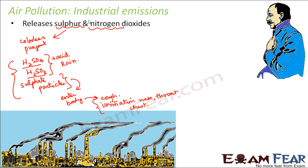Coal, oil, and gas all contain sulfur, so when you process them, sulfur dioxide is released. Similarly, industries which process mineral ores — which also contain sulfur — lead to the formation of sulfur dioxide. Handling these kinds of materials inside an industry can very easily lead to the production of sulfur dioxide.